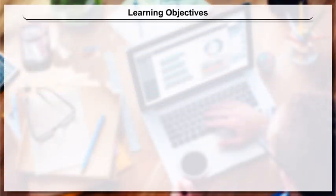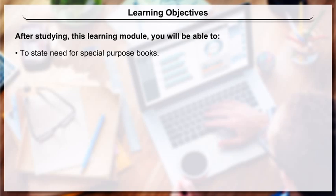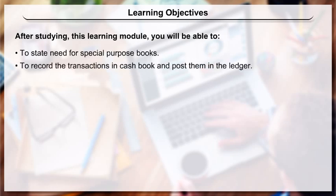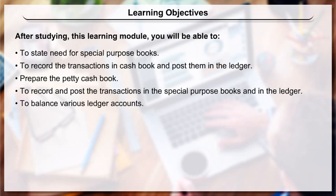Learning Objectives: After studying this learning module, you will be able to state the need for special purpose books, record transactions in the cash book and post them in the ledger, prepare the petty cash book, record and post transactions in the special purpose books and in the ledger, and balance various ledger accounts.